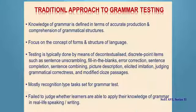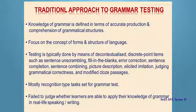Testing is typically done by means of decontextualized discrete point items such as sentence unscrambling, fill in the blanks, error correction, sentence completion, sentence combining, picture description, elicited imitation, judging grammatical correctness, and modified cloze passages. Mostly recognition type tasks — like identify the nouns or the verbs — not production type.